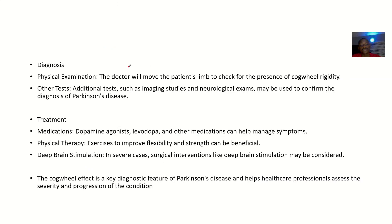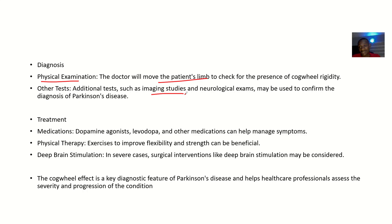For diagnosis, a physical examination can be performed where the doctor moves the patient's limb to check for the presence of cogwheel rigidity. Other tests include imaging studies and neurological examinations, which may be used to confirm Parkinson's disease. If cogwheel effect is observed, the next step is confirming the diagnosis of Parkinson's disease.